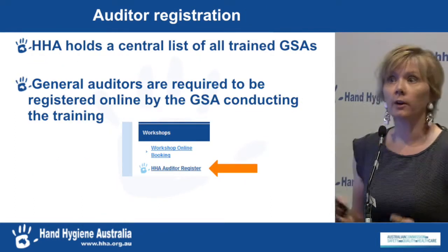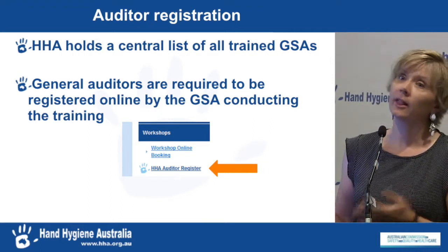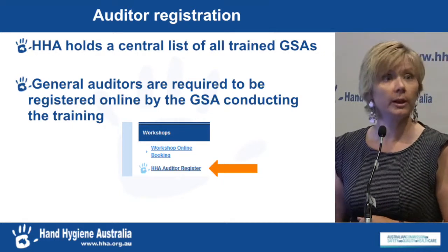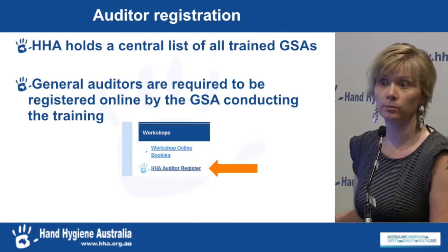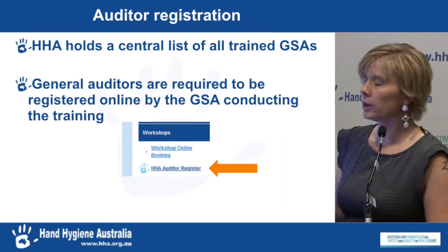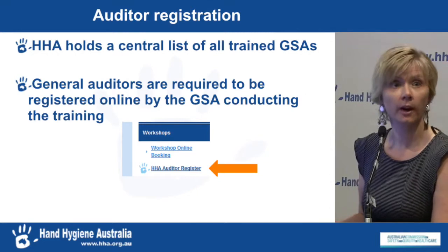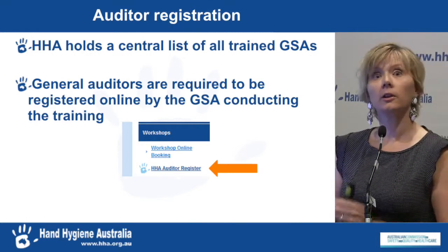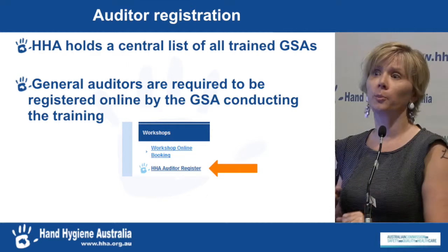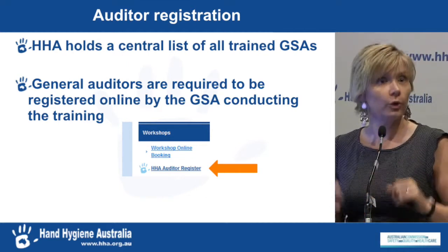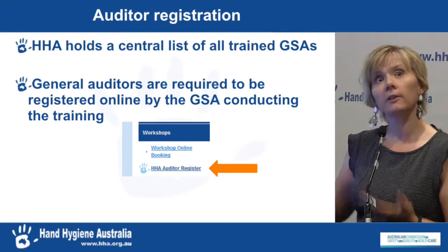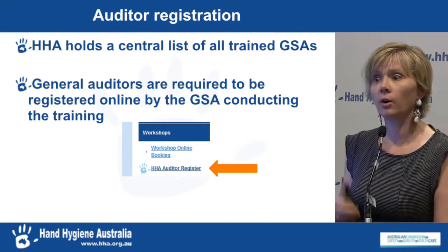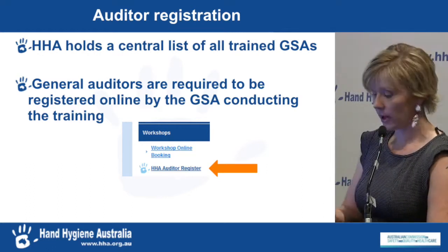Hand Hygiene Australia holds a list of all current gold standard auditors, so if people move from one hospital to another, we have record of them and their audit status. For general auditors, we need gold standard auditors to register them with us so we know they've trained others — and we know that's not always occurring. It's really important to go to the workshops tab and register every time you train others. We regularly receive contact from people who've moved hospitals and can't access the database, and if we can't find their training record, they may need to go through a whole new training program.